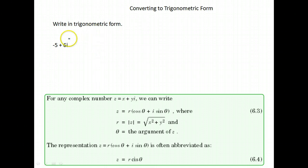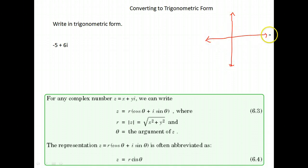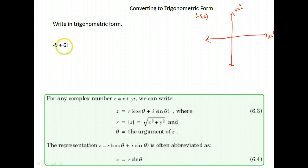One thing we need to know is how these are represented in a plane. We do graph complex numbers, but our x-axis is the real numbers part of your number, and the y-axis is the imaginary part. So this point negative 5 plus 6i would be the point (negative 5, 6) on our graph. This is our x, and this is our y.